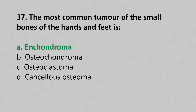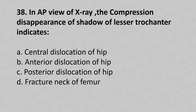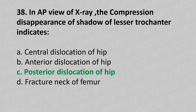Moving to our 38th question: in AP view of X-ray, the compression and disappearance of the shadow of the lesser trochanter indicates option A central dislocation of the hip, option B anterior dislocation of the hip, option C posterior dislocation of the hip, option D fracture of the neck of femur. The answer is option C posterior dislocation of the hip.